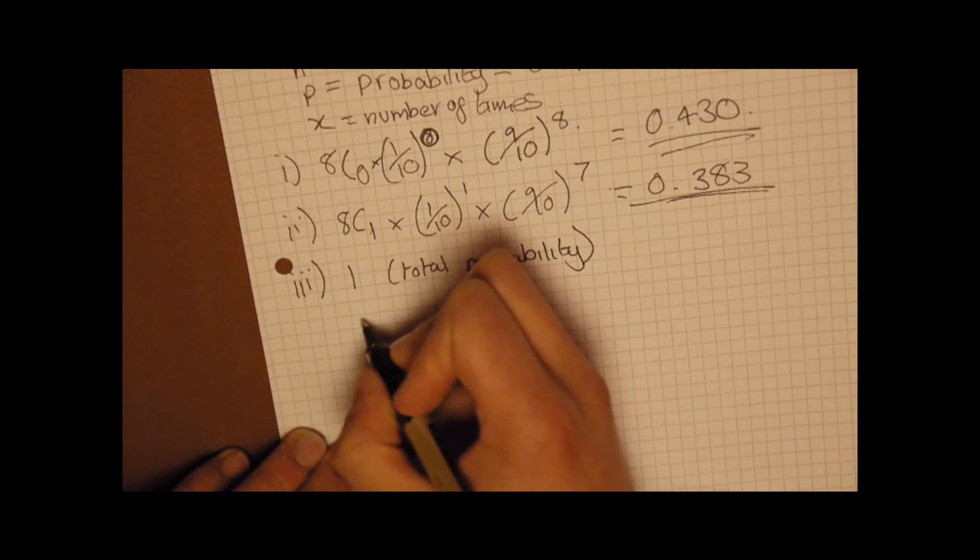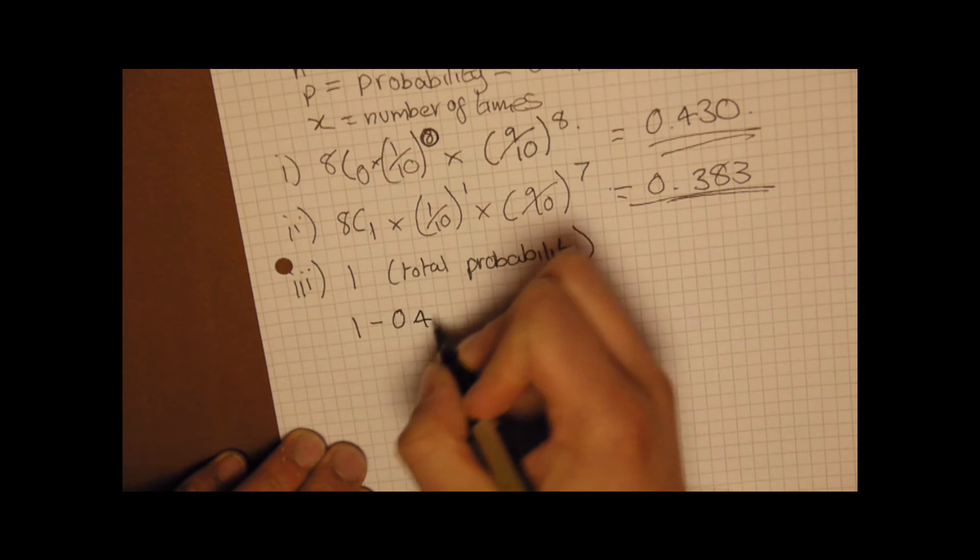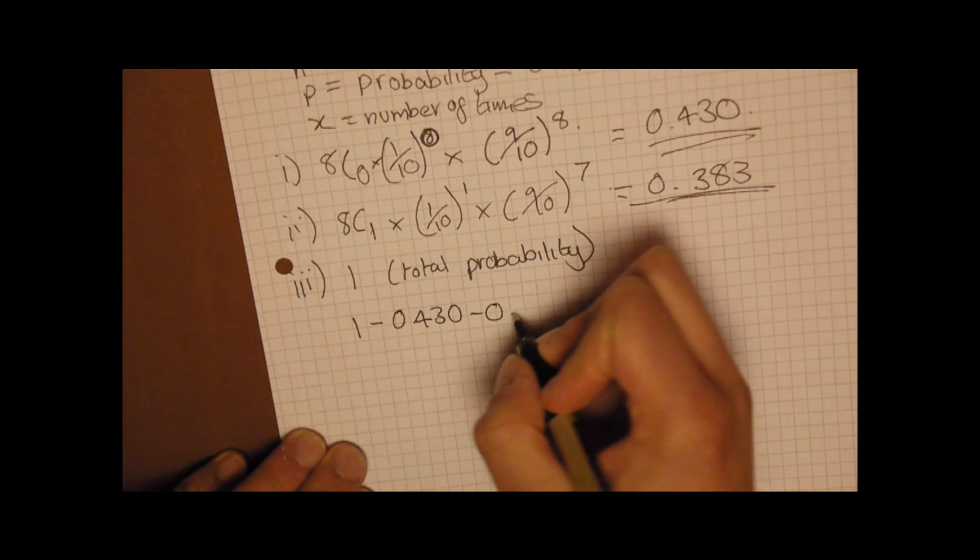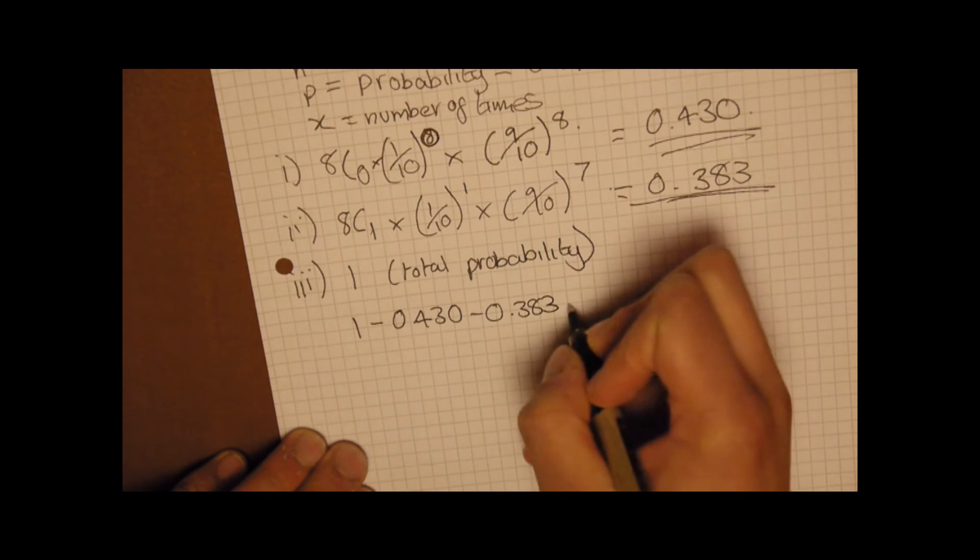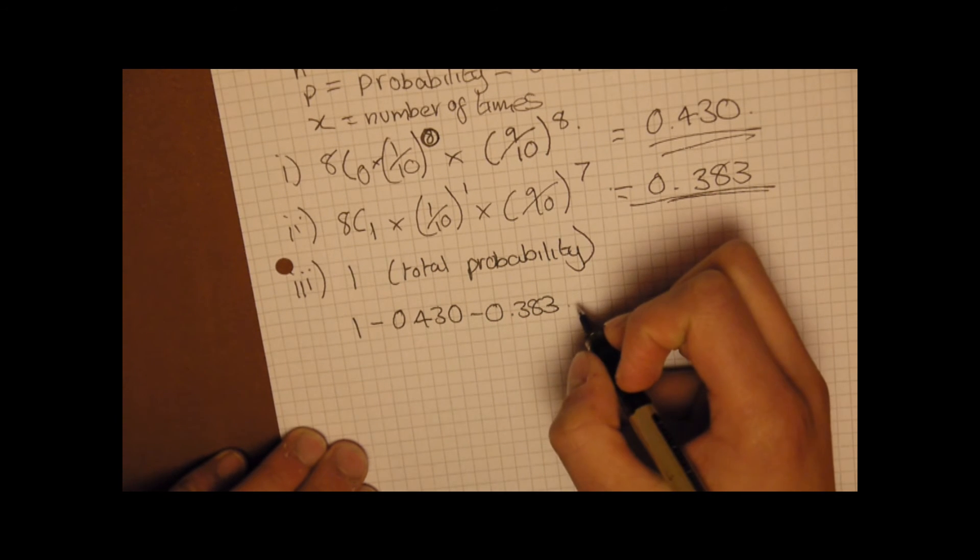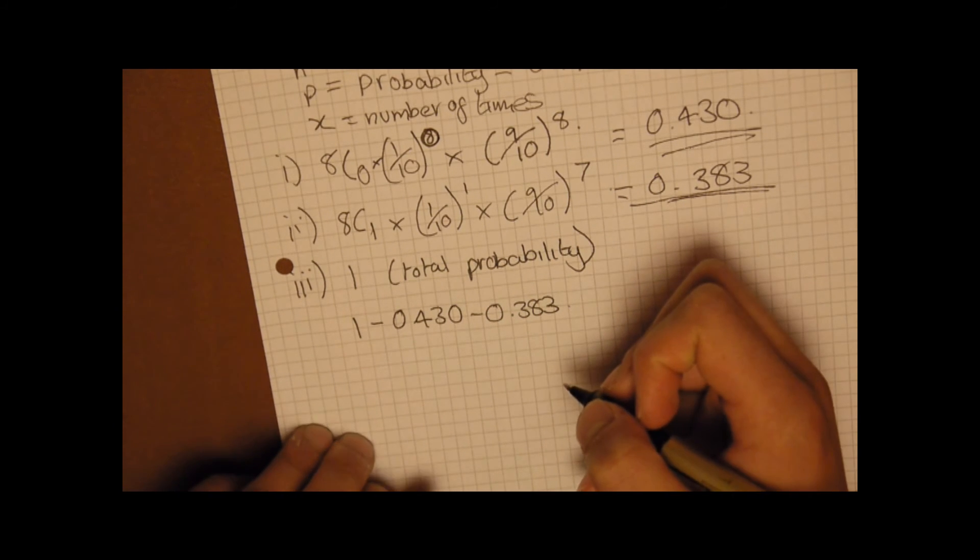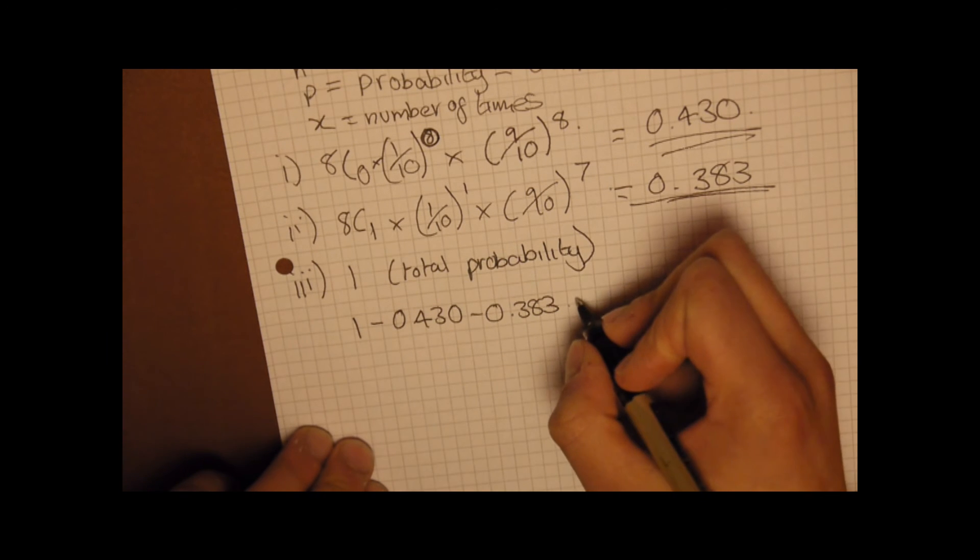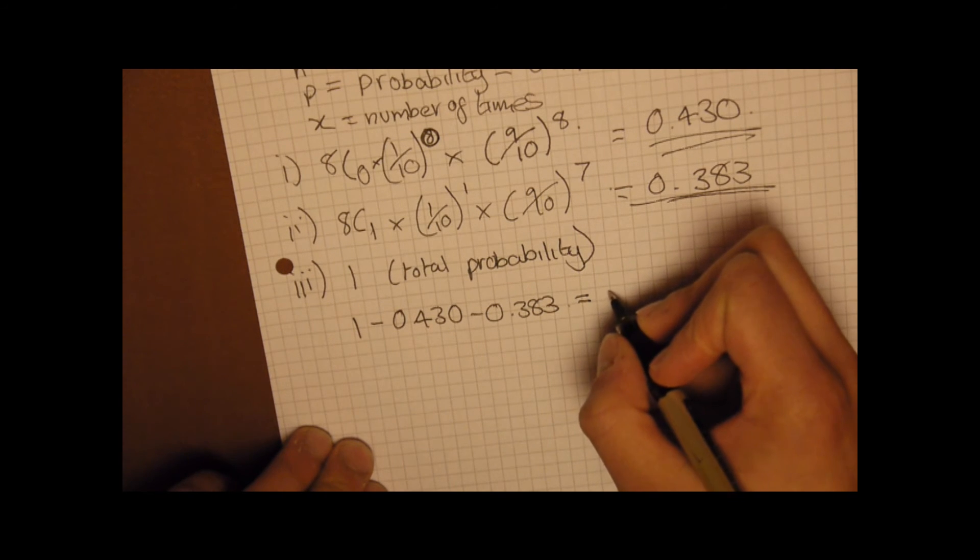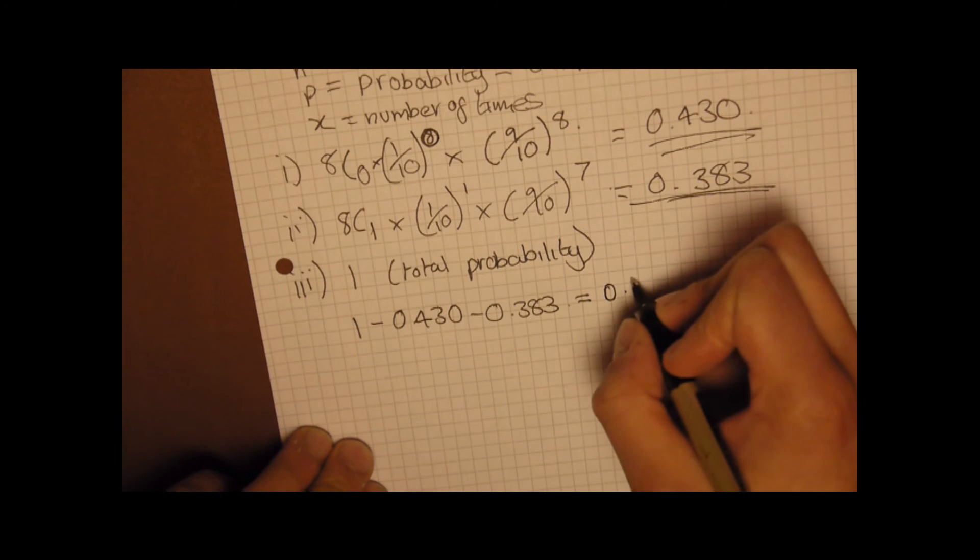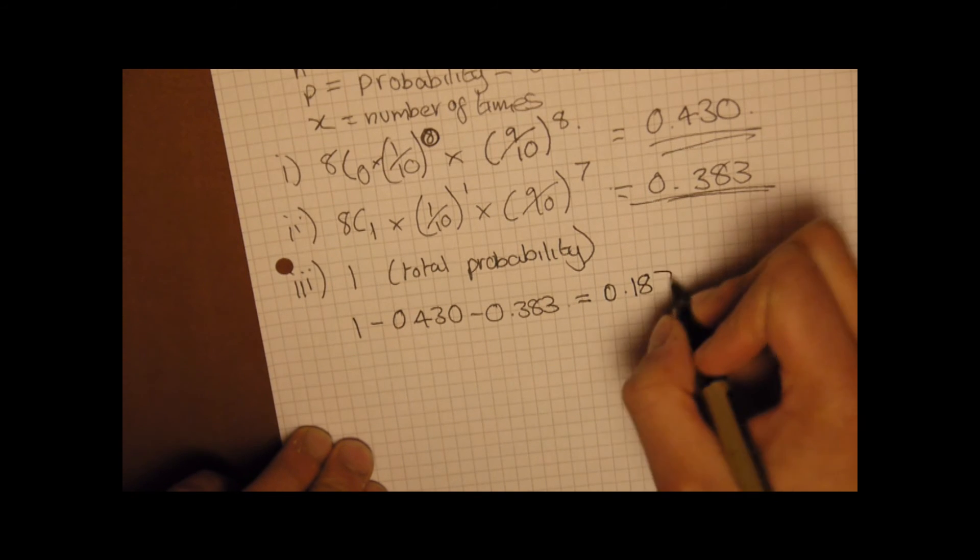And we can do 1 minus 0.430 minus 0.383, and that should give us an answer of 0.187.